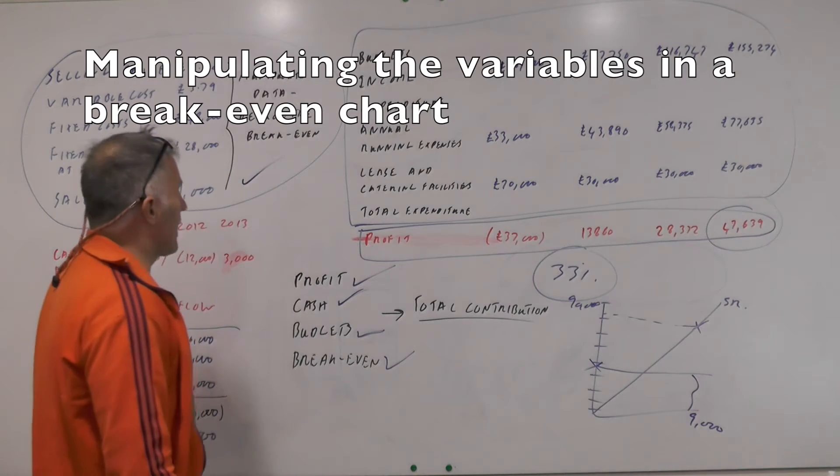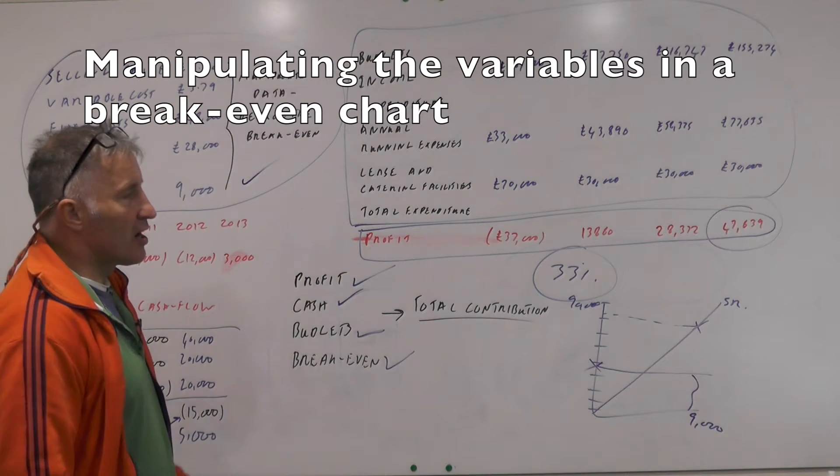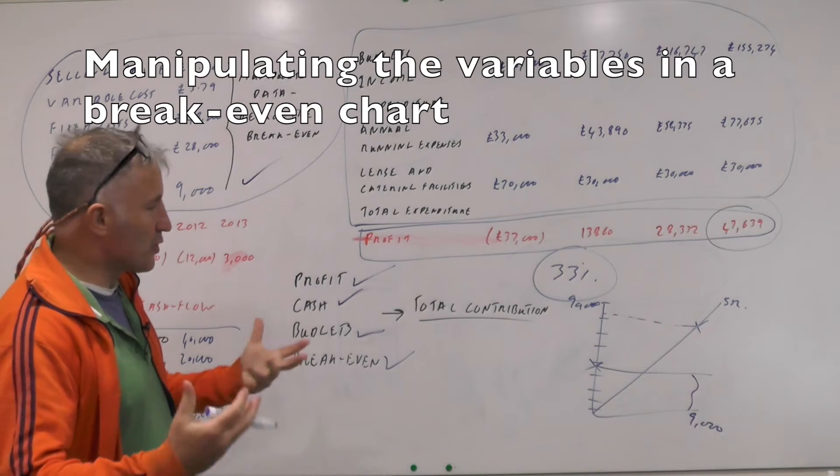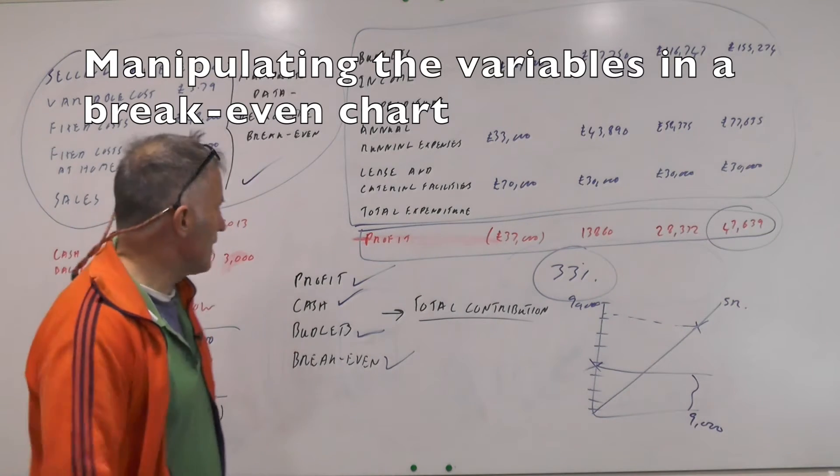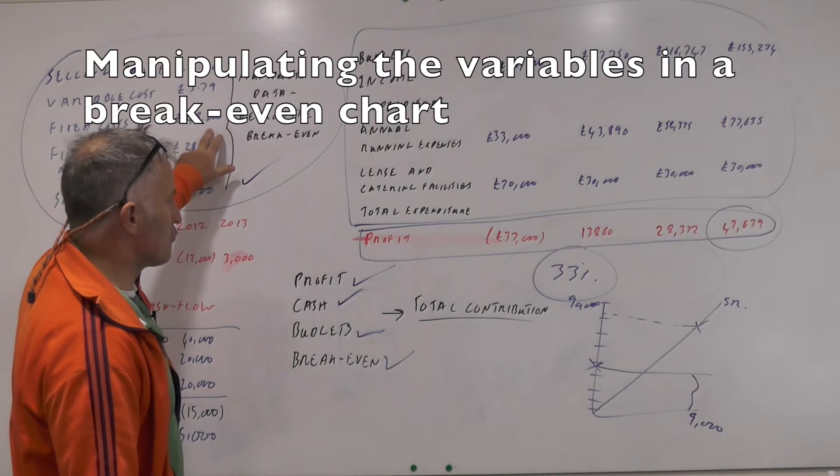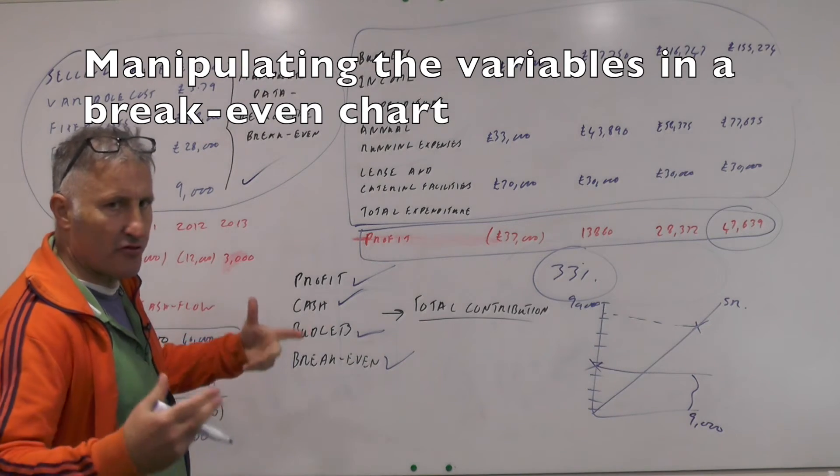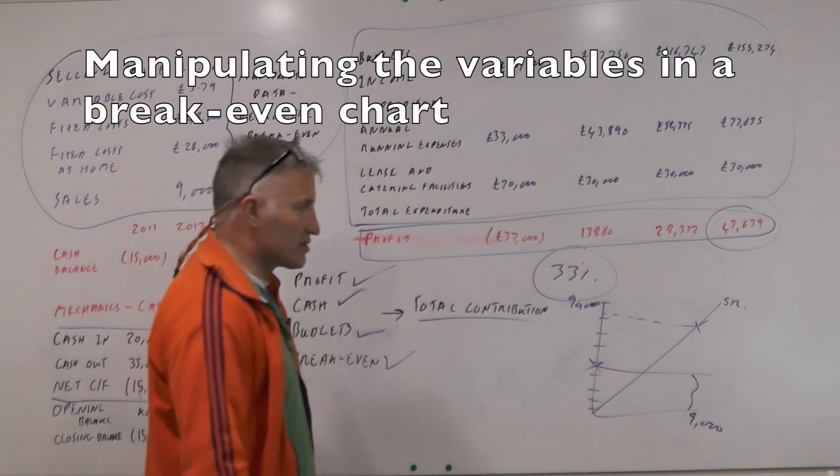And then to work out the total cost remember this. We start always start the line there. 9,000 times £3.79 is I think about 38,100 pounds roughly.